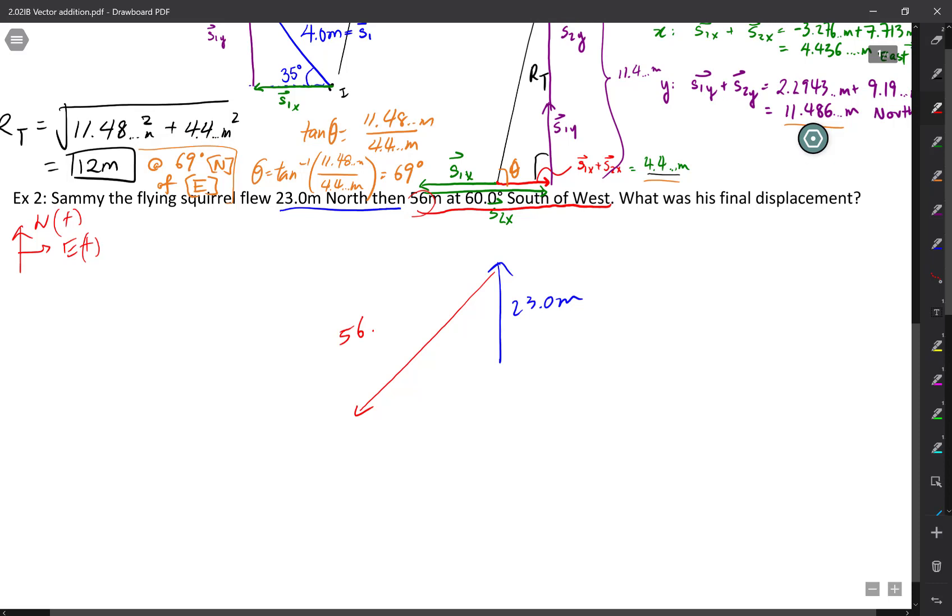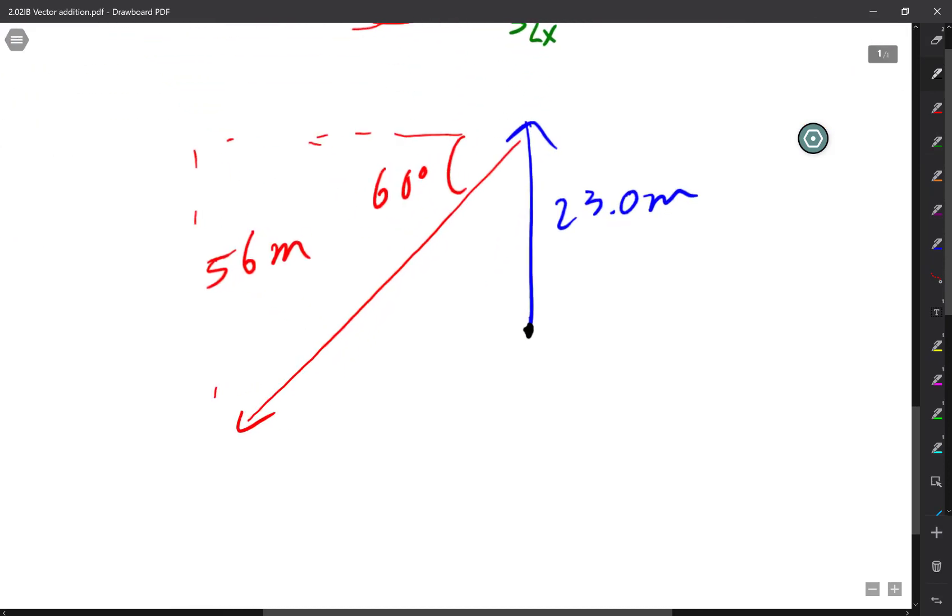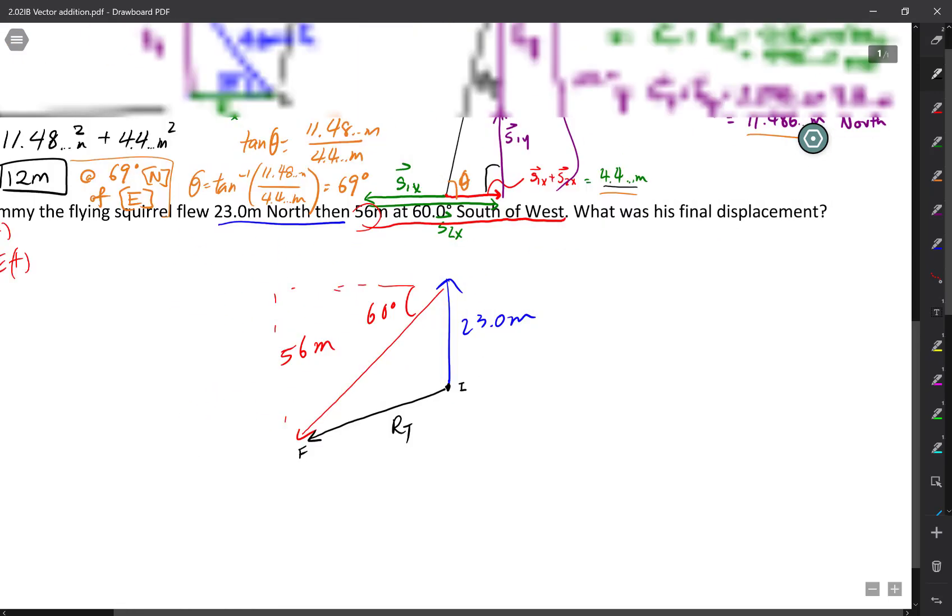And then Sammy is going to fly south of west in this general direction, but at 56 meters, which is much longer than 23. This is now 56 meters and then 60 degrees south of west. This would be I go west first and then I go south. This angle here is my 60 degrees. So here are my two vectors. Now what I'm going to do is break these two vectors into their components. Actually before that, let me just draw the resultant vector so you can see what it looks like. My resultant vector starts from the initial point where Sammy started, ends up at the final point where Sammy finishes. This is my resultant vector.